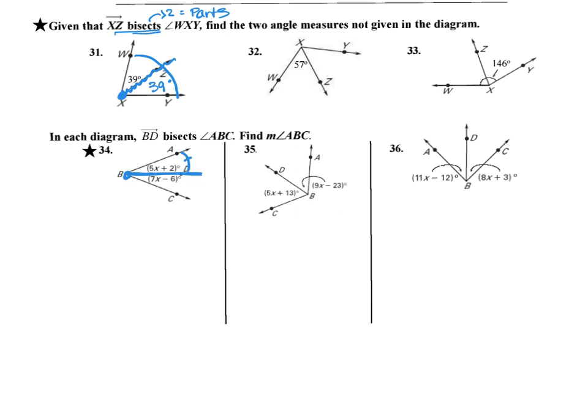I know that this side is equal to this side. That means that this equation 5x plus 2 is equal to 7x minus 6. So there's my equation 5x plus 2 equals 7x minus 6. I'm going to solve that.